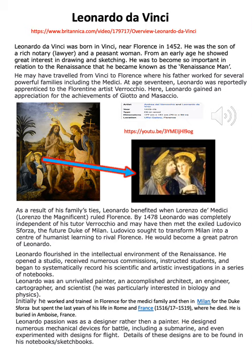Leonardo da Vinci was born in Vinci near Florence in 1452. He was the son of a rich notary lawyer and a peasant woman. From an early age, he showed a great interest in drawing and sketching, and he was to become important in relation to the Renaissance — also known as the Renaissance Man, the symbol of the Renaissance as we know him today.